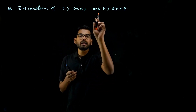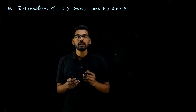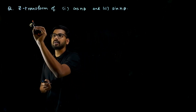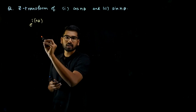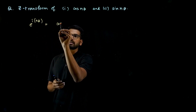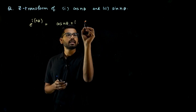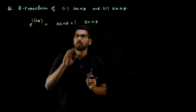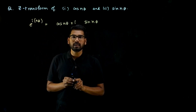Whenever they have given cos and sine in pair to find the transform, we should use Euler's formula. Euler's formula states that e^(iθ) or e^(inθ) can be written as cos(nθ) plus i·sin(nθ). So cos plus i·sine is basically e^(iθ), and whatever angle is here should be there.